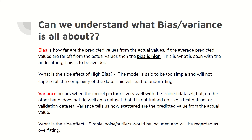Bias is simple — it is how far the predicted values are from the actual values. If the average predicted values are far off from the actual values, then we call it high bias. That is what we have seen in underfitting. The side effects of high bias: the model will be so simple that it will not capture all the complexity of the data, and this leads to underfitting. This is the distance or difference between the predicted values and the actual values, and this leads to high bias which causes underfitting.